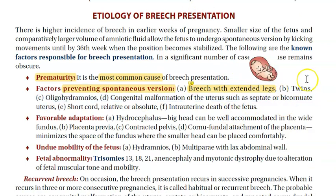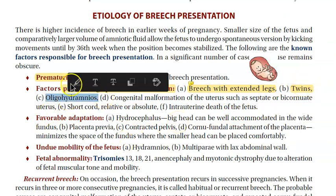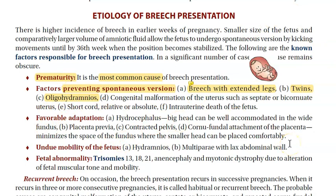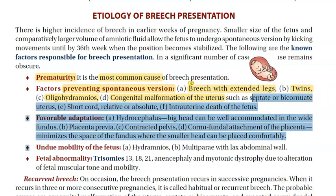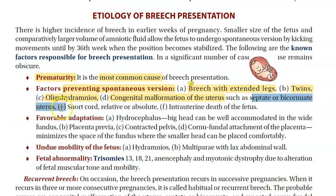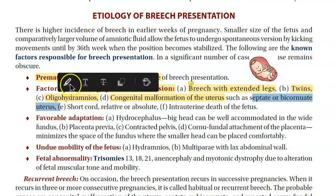Twins — if twins are present, how difficult is it for the baby to undergo spontaneous version? Oligohydramnios: there is little amniotic fluid, so it is very difficult for the baby to turn. Congenital malformation of the uterus — the uterus itself is not properly shaped. There can be a septate or a bicornuate uterus which will not allow the baby to turn.